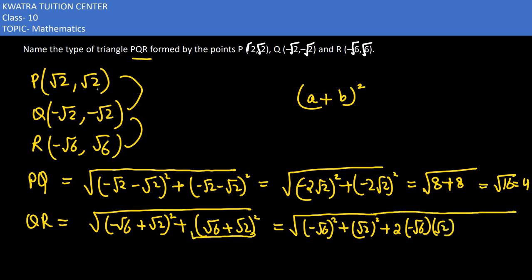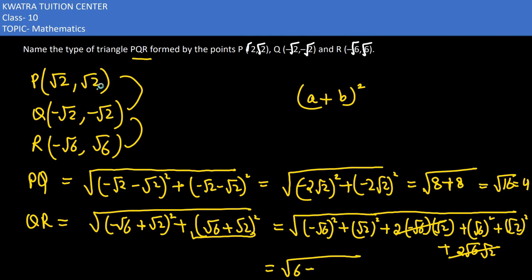Using (a + b)² = a² + b² + 2ab, we get √6 squared plus √2 squared, and the last term 2√6·√2 cancels. So √6 squared is 6, √2 squared is 2, giving 6 + 6 = 12, plus 4 = 16. So √16 = 4, meaning QR = 4.